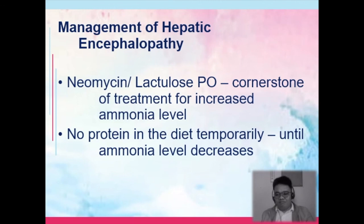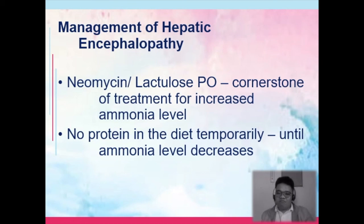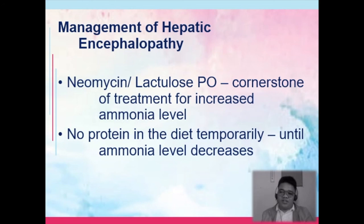For management of hepatic encephalopathy: the cause is increased ammonia due to the failure of the liver to convert ammonia to urea. Neomycin, an antibiotic, is given to decrease blood ammonia levels. Lactulose, a laxative, is also given to decrease ammonia levels. Protein is temporarily removed from the diet until ammonia levels decrease, because protein continues to convert to ammonia if not restricted.